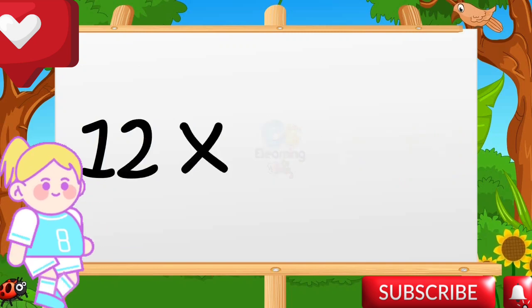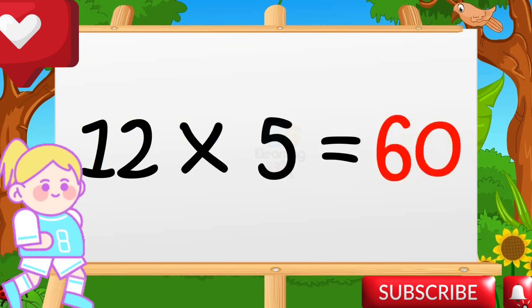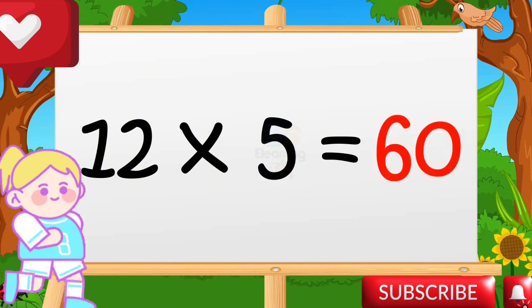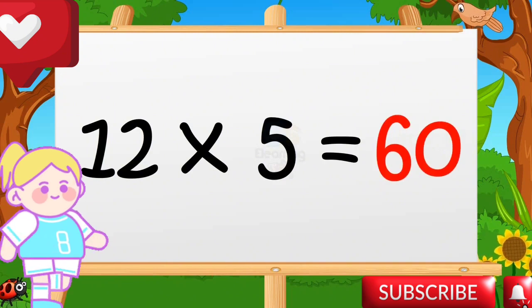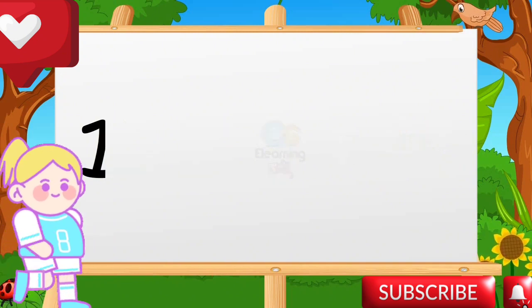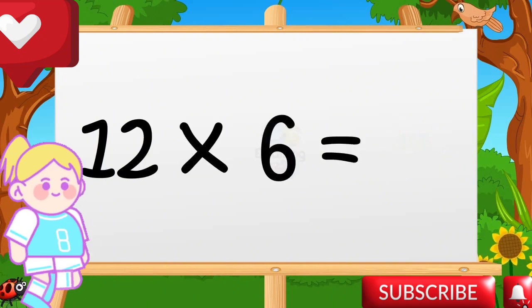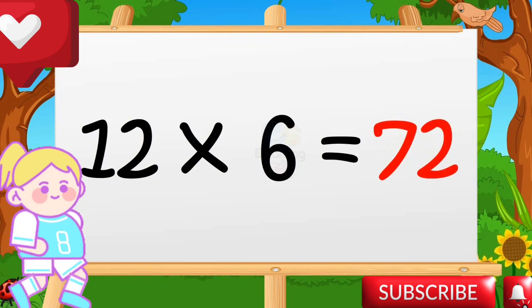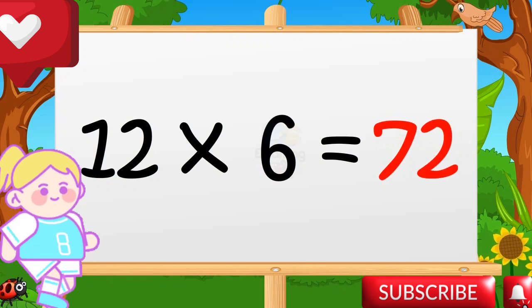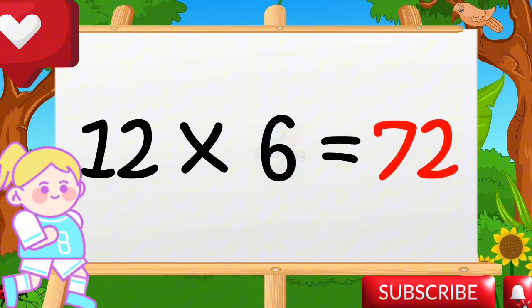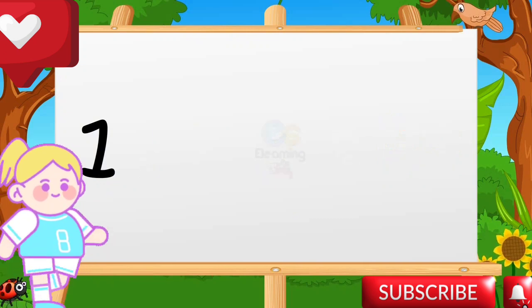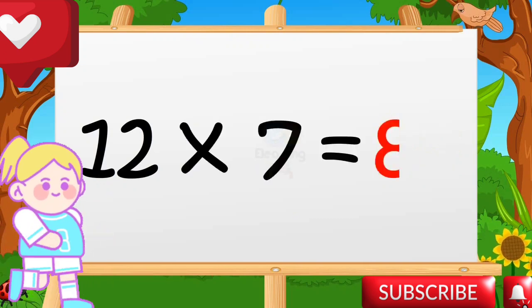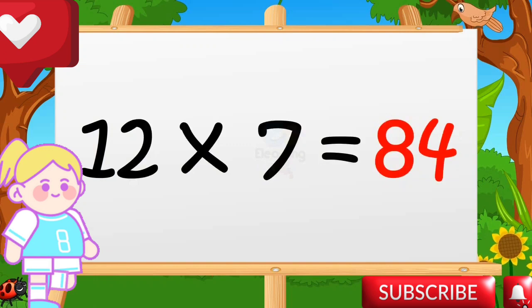Twelve fives are sixty. Twelve sixes are seventy-two.